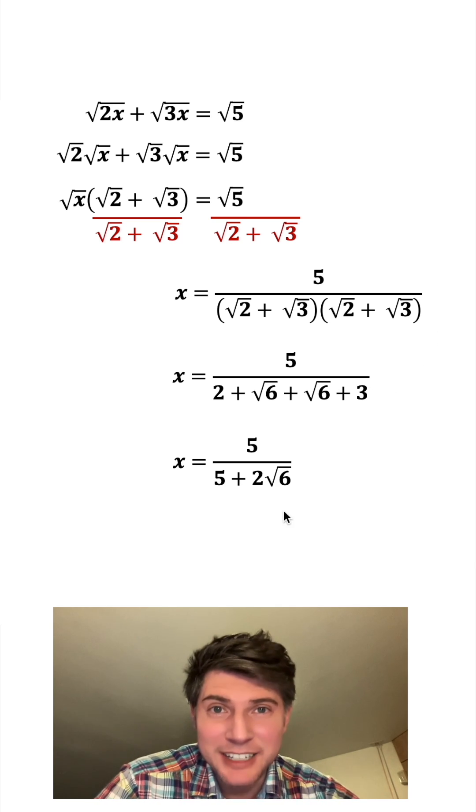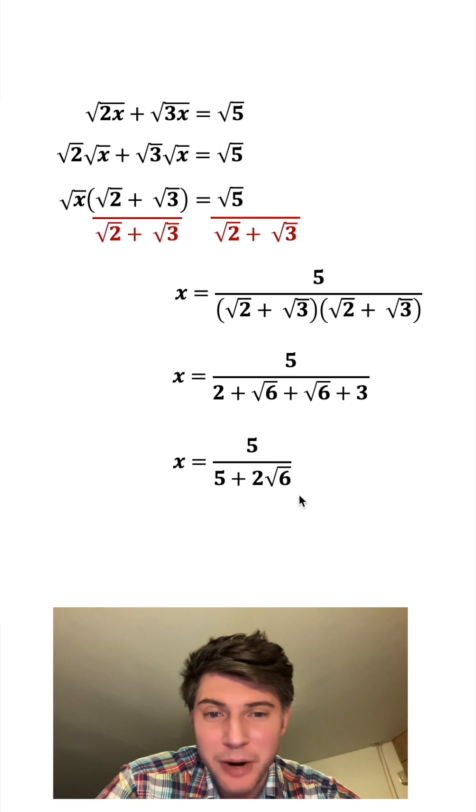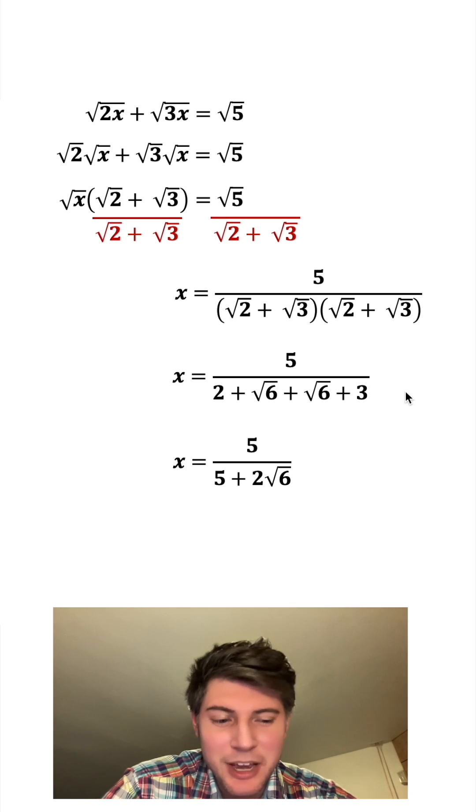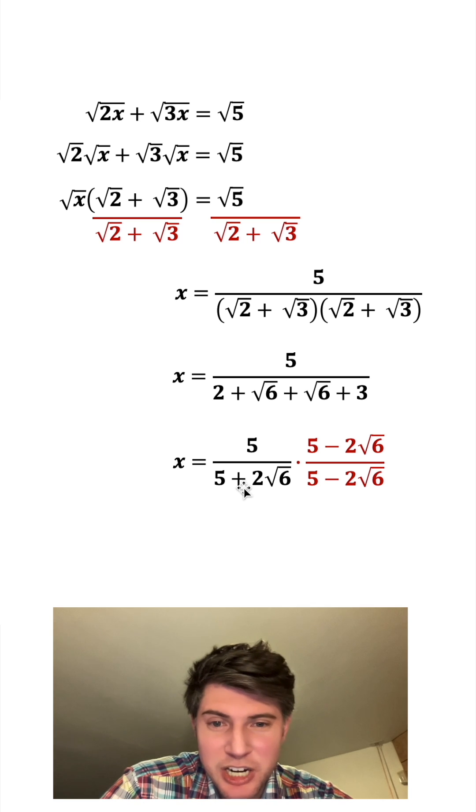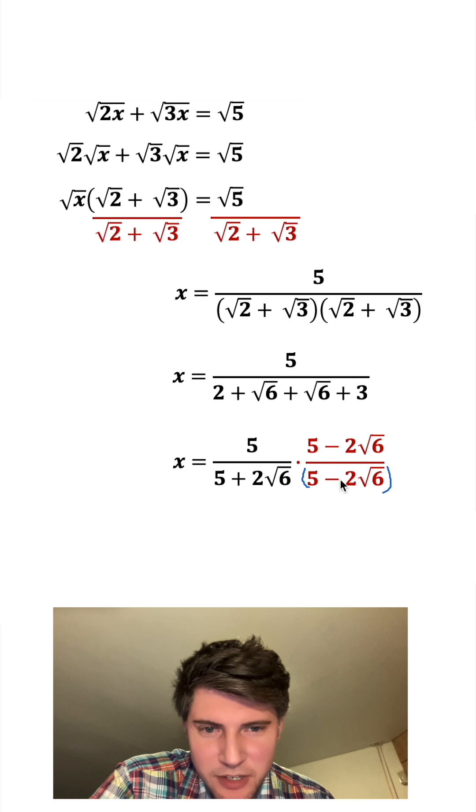This looks a lot more simplified, but we're technically still not done. We're not supposed to have the radical in the denominator. So to deal with that we're going to multiply top and bottom by the conjugate. To get the conjugate, if you notice we just changed the plus to a minus, and now we're going to multiply these and there's an implied parentheses on each of these.